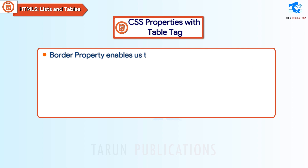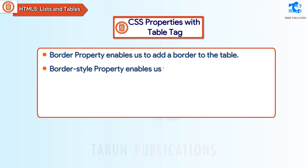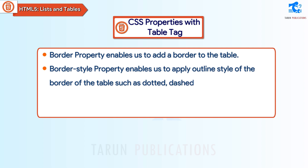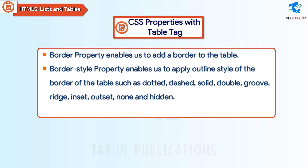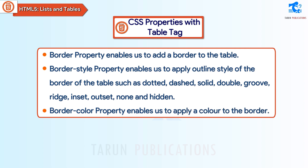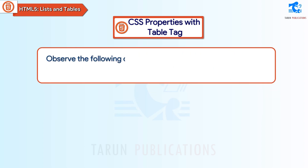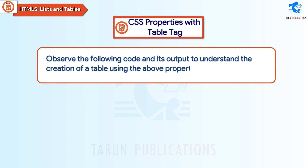The border property enables us to add a border to the table. The border-style property enables us to apply an outline style to the border, such as dotted, dashed, solid, double, groove, ridge, inset, outset, none, and hidden. The border-color property enables us to apply a color to the border. Observe the following code and its output to understand the creation of a table using the above properties.